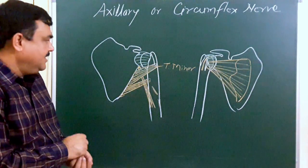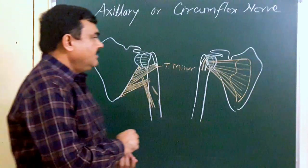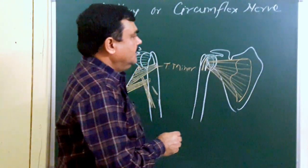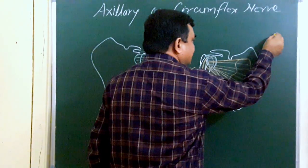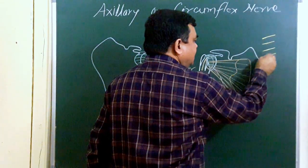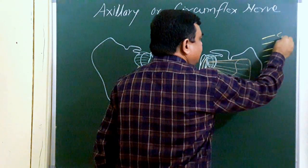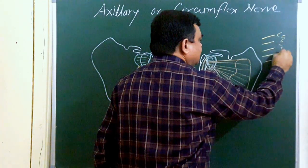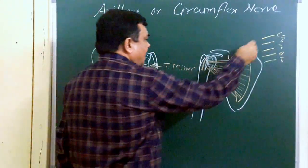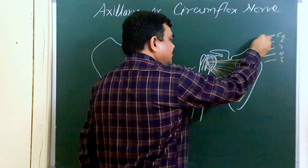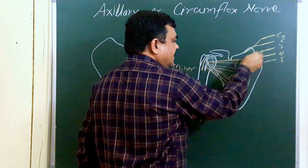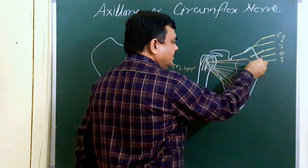Now we will discuss the axillary nerve. Before starting, we will make a diagram of the brachial plexus. Here are the ventral rami: C5, C6, C7, C8, and T1. C5 and C6 join to form the upper trunk. This is the middle trunk, and this is the lower trunk.